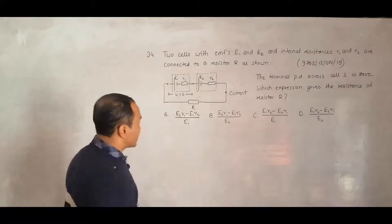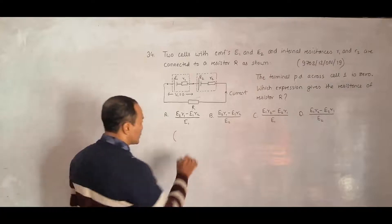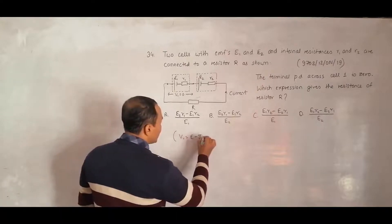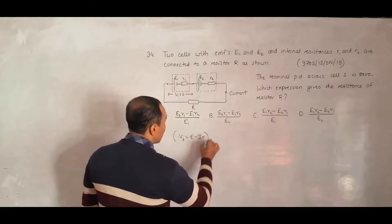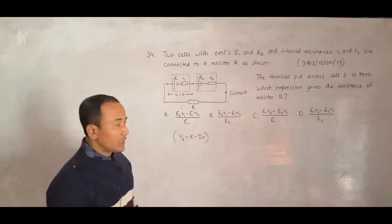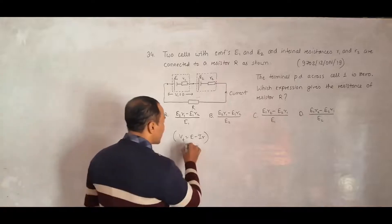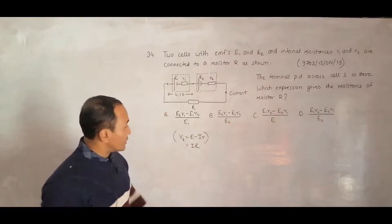One thing that we have to remember is, the expression for the terminal PD in any arrangement is V1 equals E minus I into, let us say V terminal, which we often say as E minus I into R, where R is the internal resistance of the source.